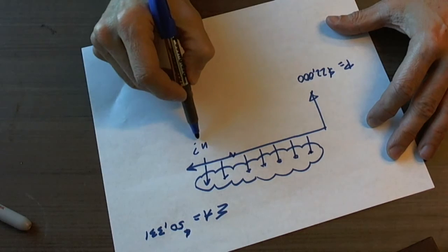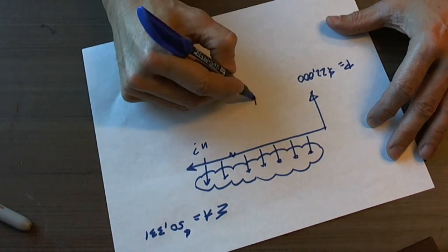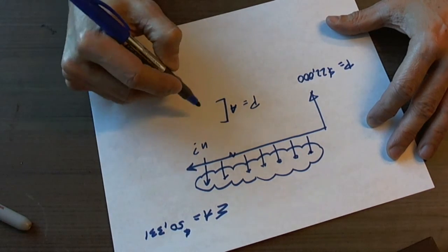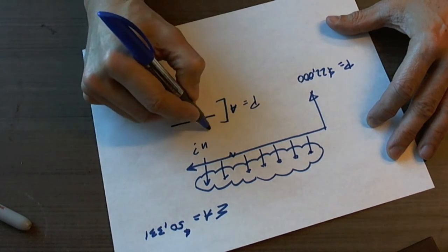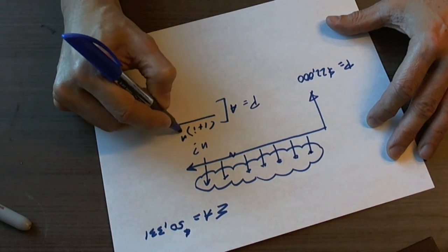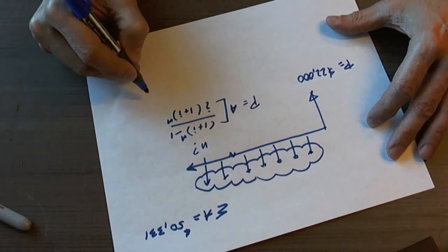To find out the number of payments that are made using annual compounding, we're going to use the same formula that should be familiar to us by now. P equals A times the quantity (1 plus i) raised to the n minus 1, all over i(1 plus i) to the n.